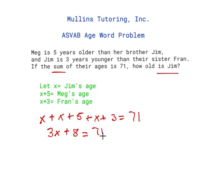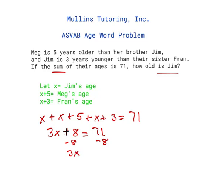Whenever we're solving a problem, we always want to add our like terms together first. Since we're trying to solve for x, the next step is to get rid of the constant by doing the opposite operation. Since this is adding 8, we're going to subtract 8 from both sides. So now I have 3x is equal to 63.